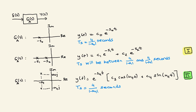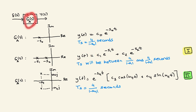Now let's look at the case where you have two poles that are both real. You can write the solution like this — this is the unforced response of the system. If these poles are close to each other, like minus one and minus two, the settling time will be between the two corresponding values. The dominant pole will be the one closest to the imaginary axis.